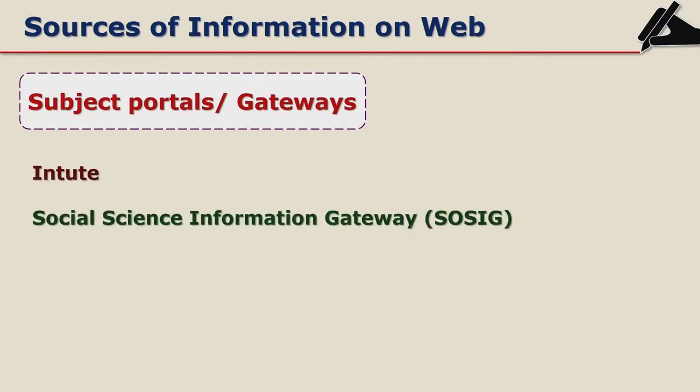Among sources of information on the web, subject portals or gateways are very important. For example, SOSIG — the Social Science Information Gateway — has been renamed as INTUTE, and under INTUTE you will get information on subjects related to social sciences. Detailed information on INTUTE will be covered in another module.